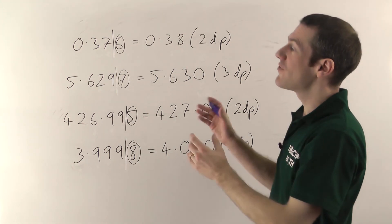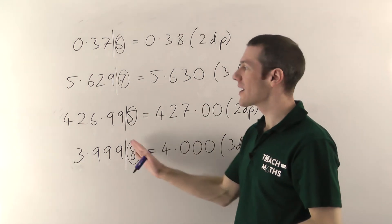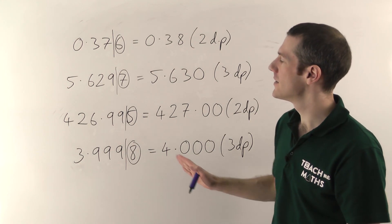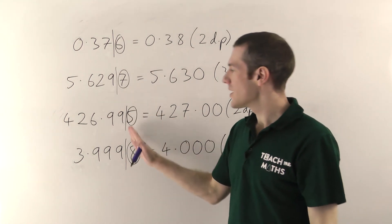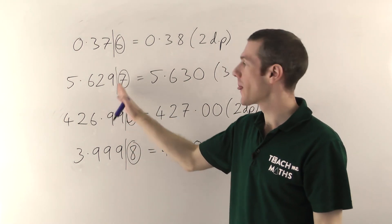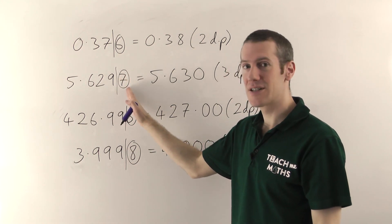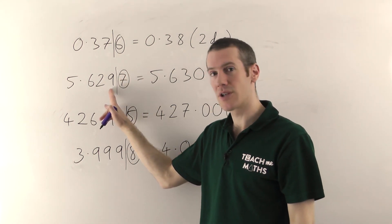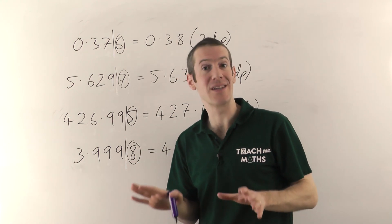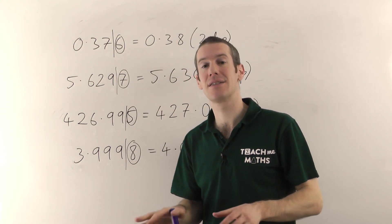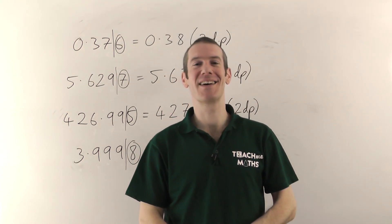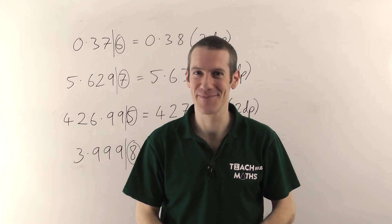So that's rounding to decimal places. Don't get caught out with the 9s. Essentially, your rule is: put your line after however many decimal places you need — two, three, wherever. Look at the next digit. If it's 5 or more, this one goes up. Less than 5, and it stays the same. My name is Jonathan Hicks and you're watching Teach Me Maths.